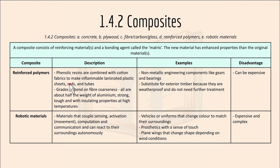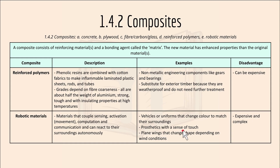Reinforced polymers use resins combined with cotton fabrics to make flammable-resistant laminated plastic sheets, rods and tubes. The grade depends on fiber coarseness; all are about half the weight of aluminium and are strong, tough and have insulating properties at high temperatures. Examples include non-metallic engineering components like gears and bearings, and substitutes for exterior timber as they are weatherproof and need no further treatment. Robotic materials couple sensing, activation, computation and communication and can react to their surroundings autonomously. Examples include vehicles or uniforms that change color to match surroundings, prosthetics with a sense of touch, and plane wings that change shape depending on wind conditions. A disadvantage is that they can be expensive and complex.